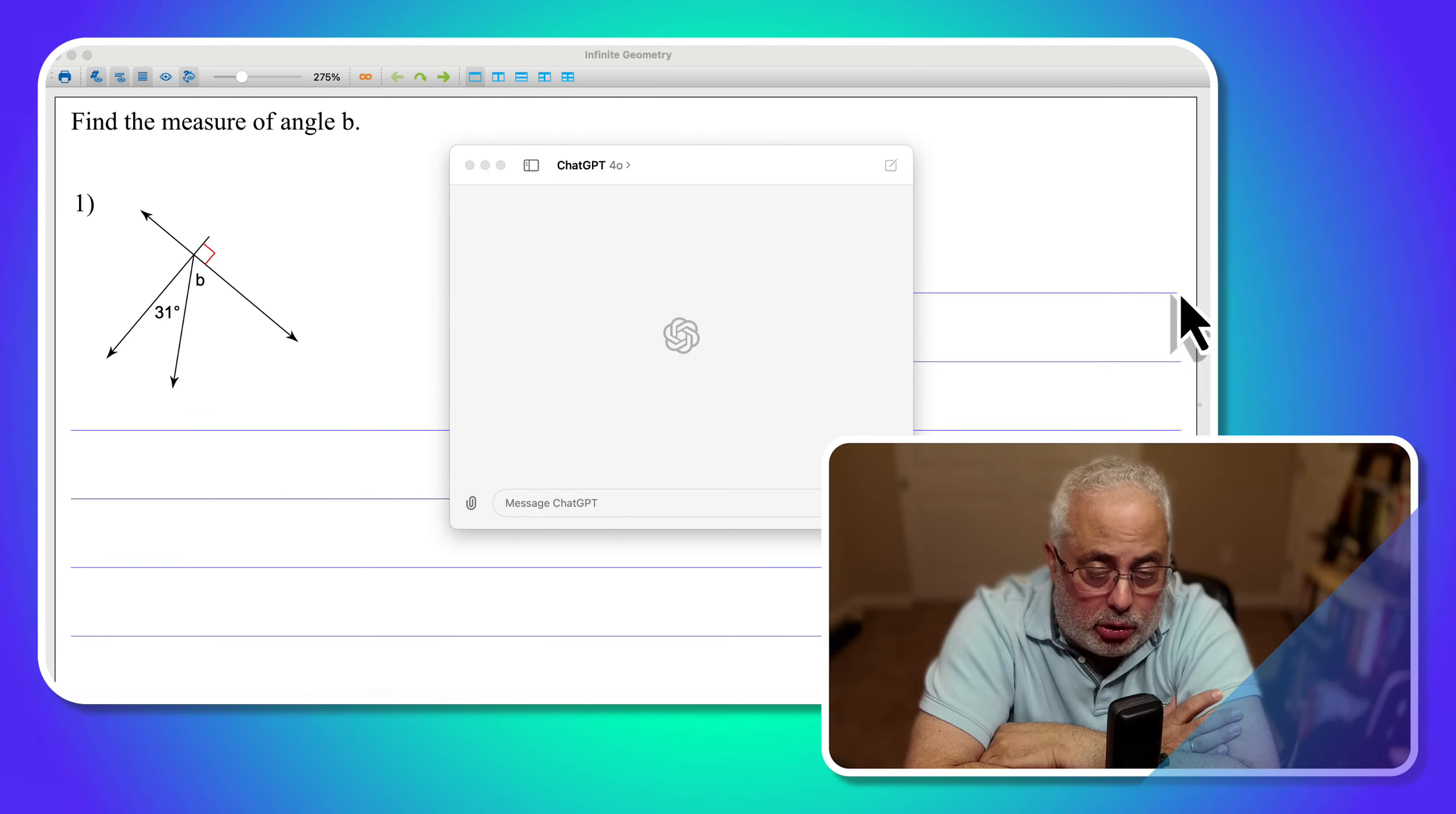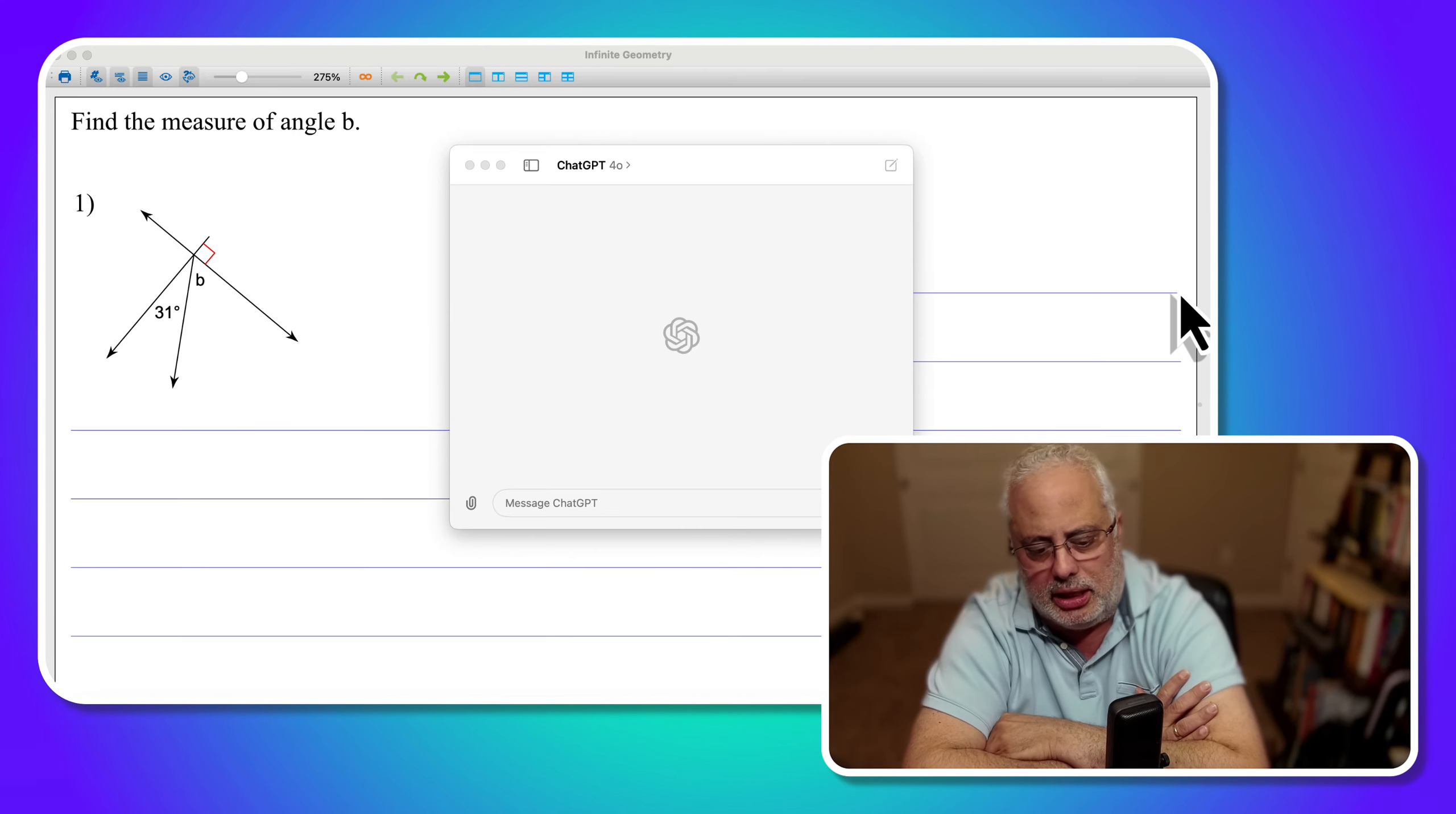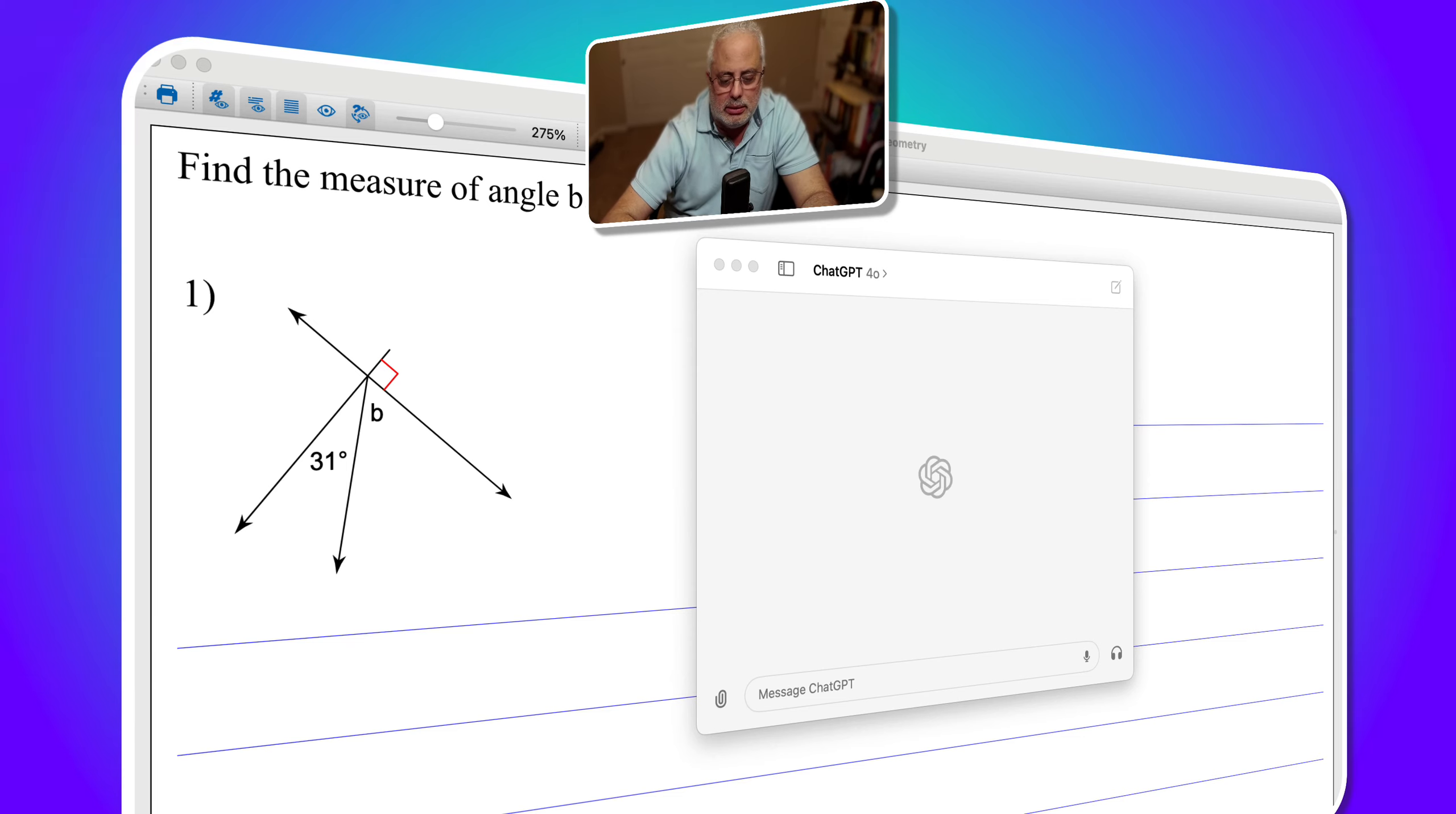There is another feature here in ChatGPT app. Look at the question that I have there. It's a geometric question, and I have to find the missing angle b. I copy and paste this, and I ask ChatGPT to find the answer and the explanation. So let me paste the right here.